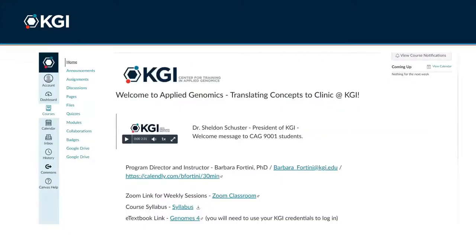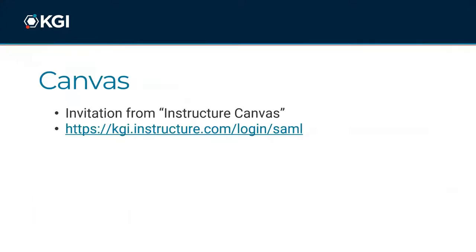KGI uses Canvas Learning Management System as the online home for its courses. You will receive an invitation from Instructure Canvas to alert you that you have been added to the course in which you are enrolled. In the event that the invitation requests a code to log in, you can access Canvas via the direct KGI link shown here on this slide and included in the email you received with this orientation video. Please note that your Canvas login will require your KGI credentials.